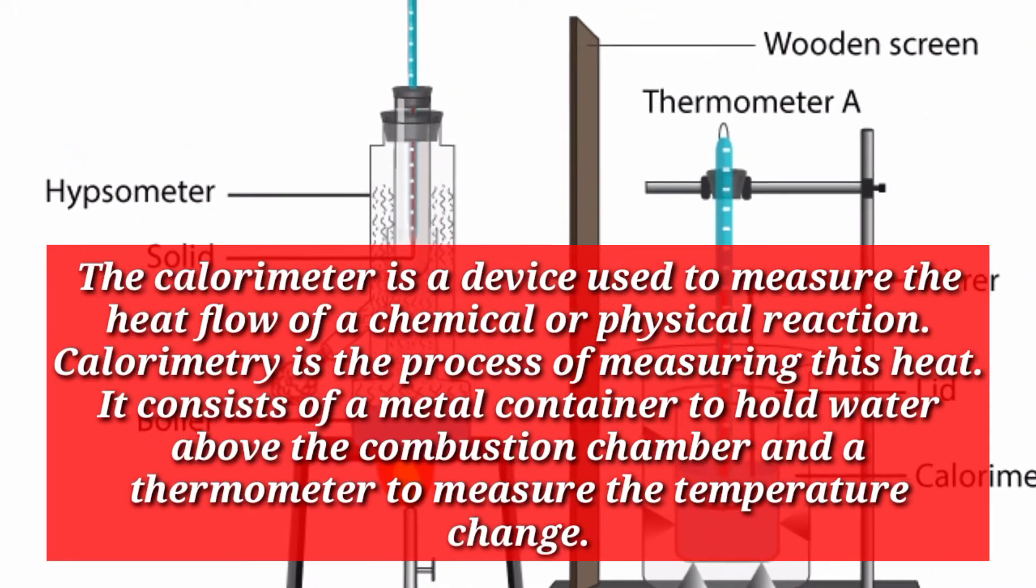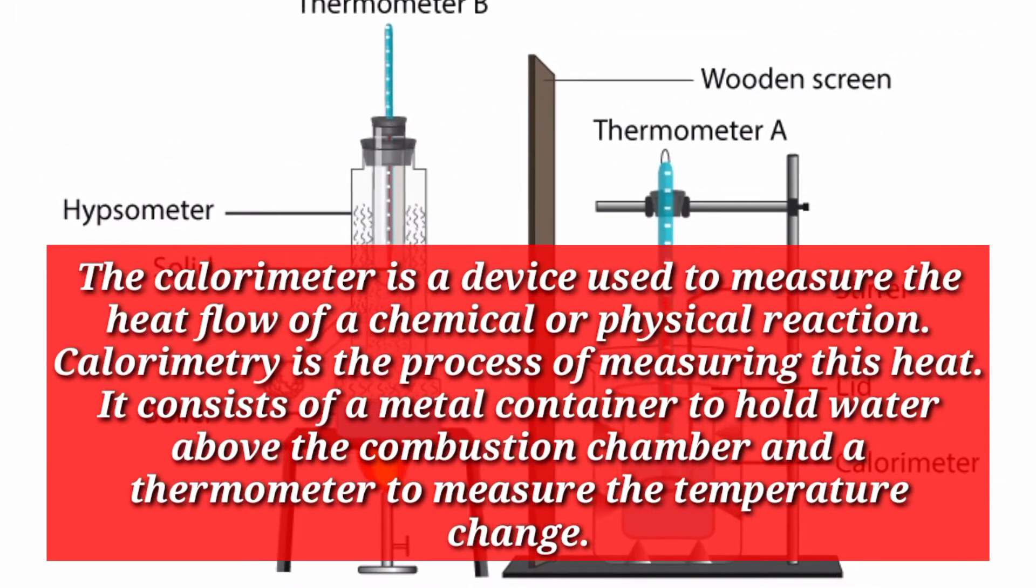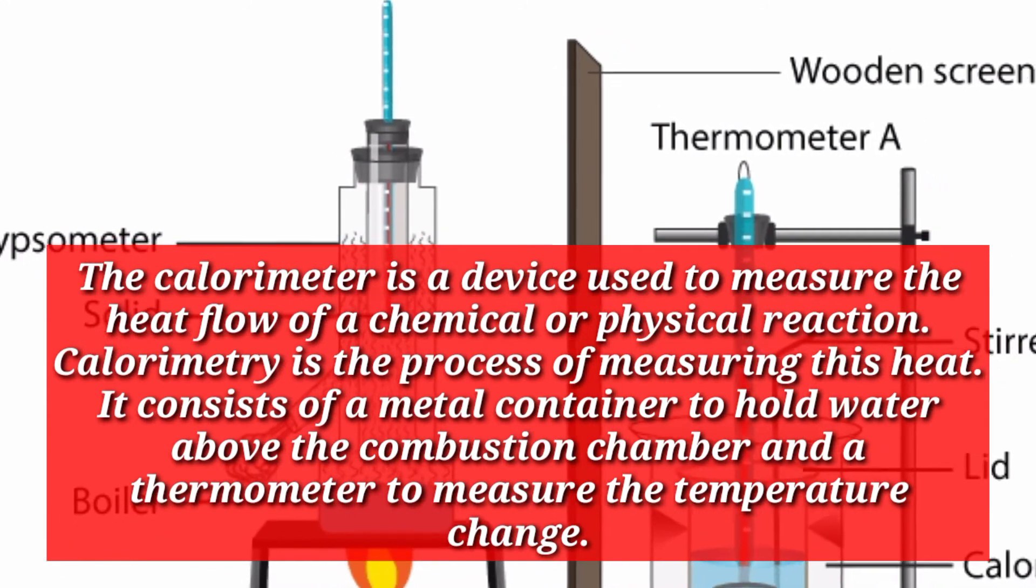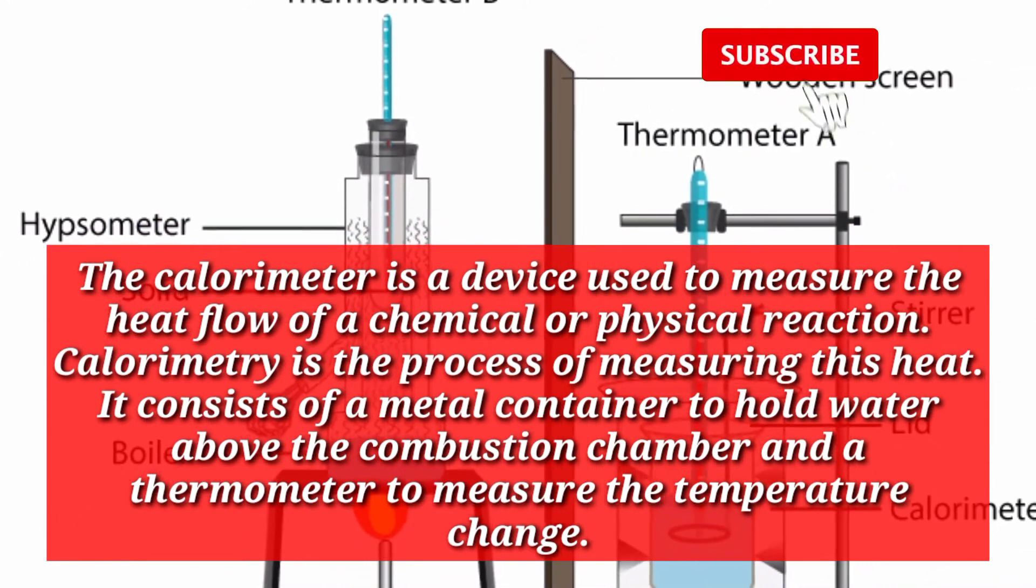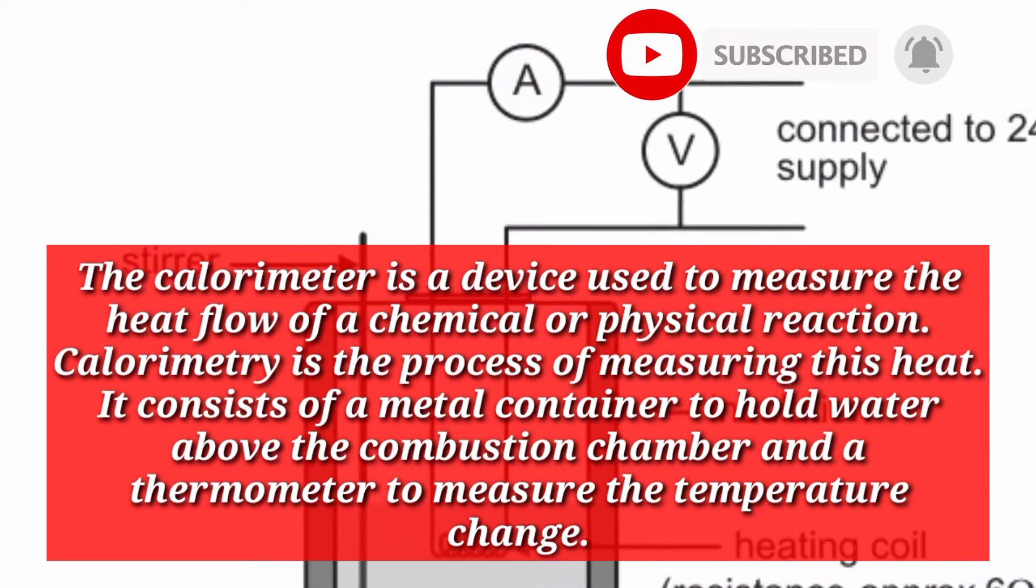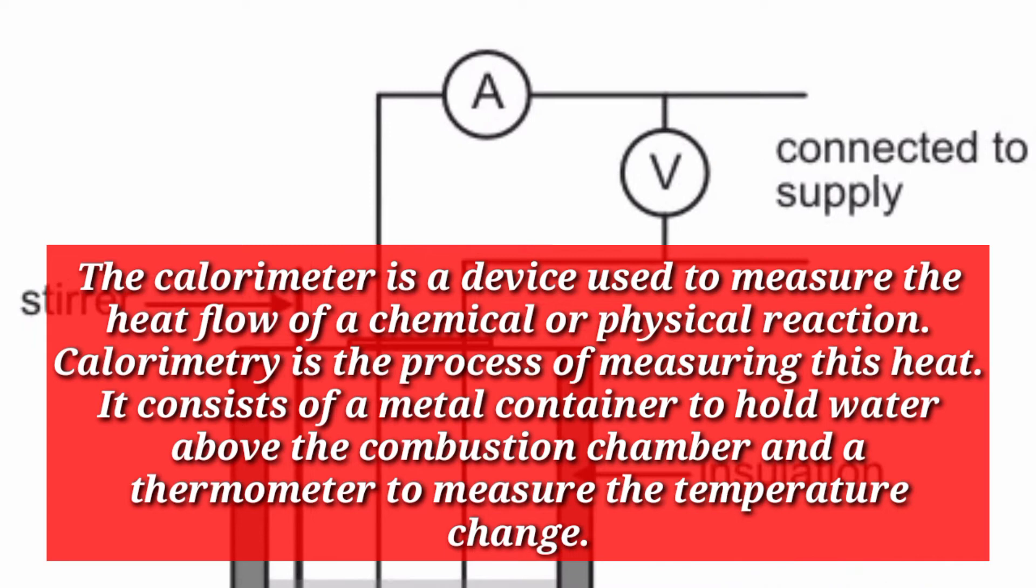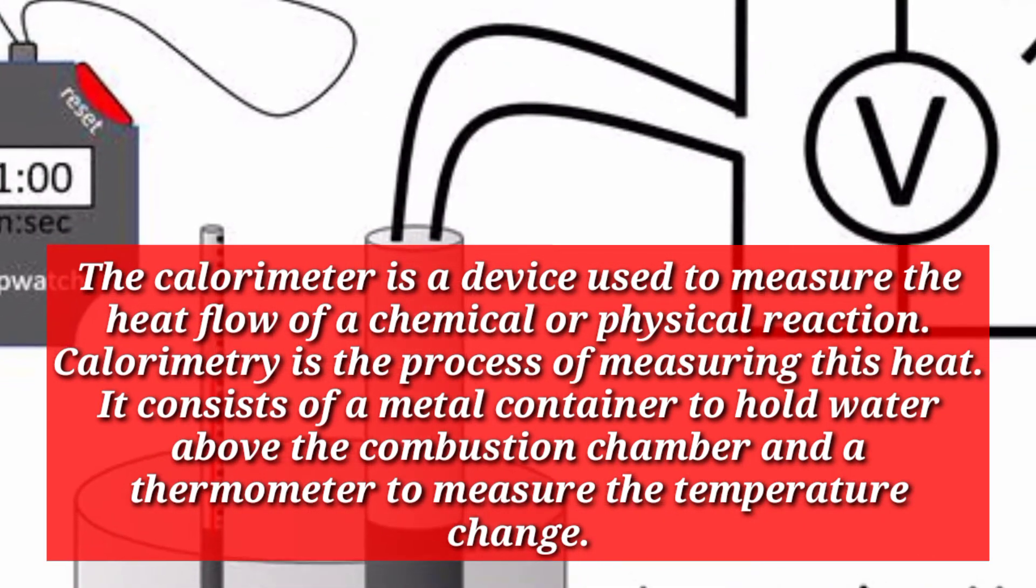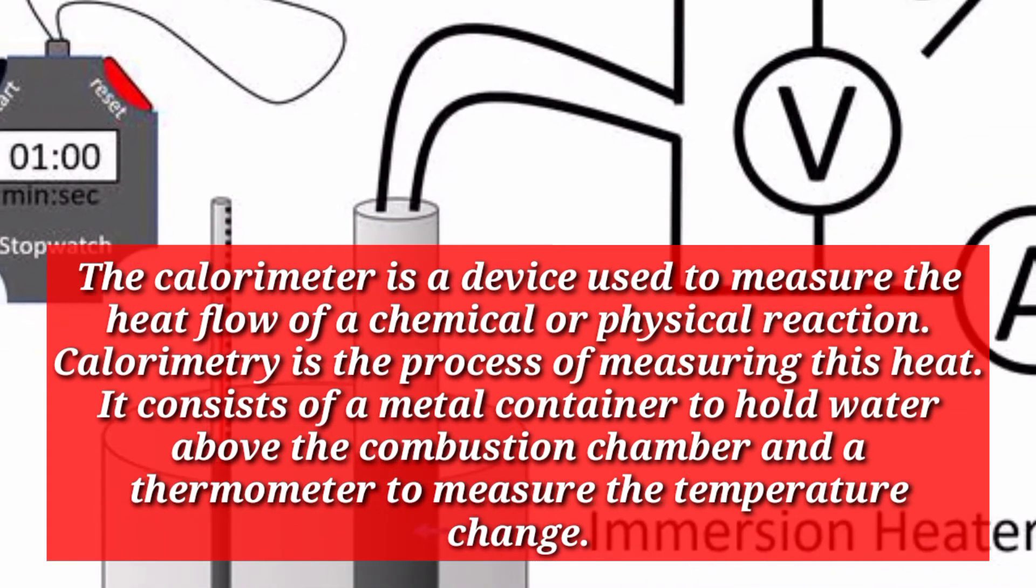The calorimeter is a device used to measure the heat flow of a chemical or physical reaction. Calorimetry is the process of measuring this heat. It consists of a metal container to hold water above the combustion chamber and a thermometer to measure the temperature change.